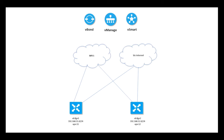Attached is the topology we will be using for this demo. VH1 has a service LAN in VPN 11, while VH2 has a service LAN in VPN 12. By default, within the SD-WAN fabric, routes are not leaked between the VPNs.